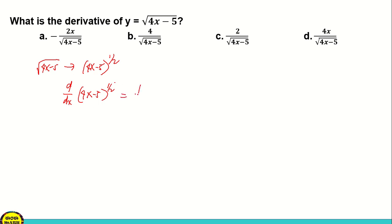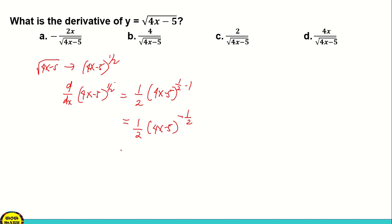So it will become 1 half times 4x minus 5 raised to 1 half minus 1. If we subtract 1 half minus 1, that will become 1 half times 4x minus 5 raised to negative 1 half, since 1 half minus 1 is negative 1 half. Since we cannot have a negative exponent, we move it down: 1 over 4x minus 5 raised to 1 half.